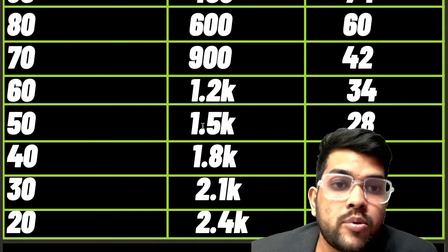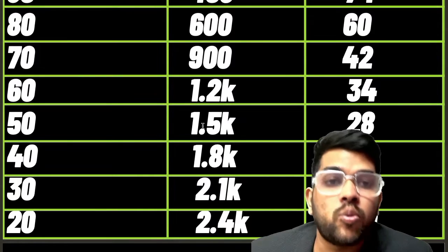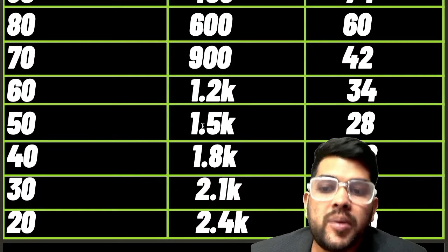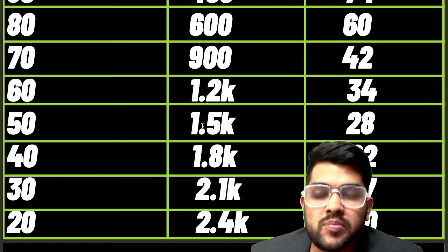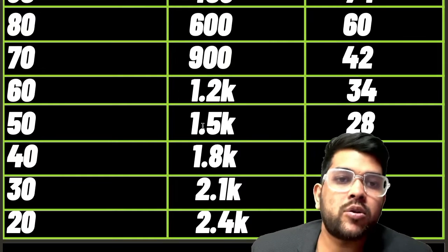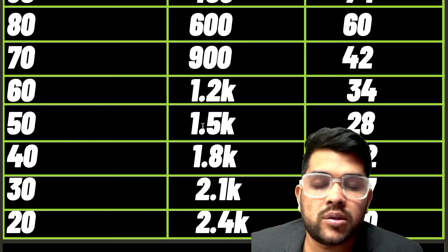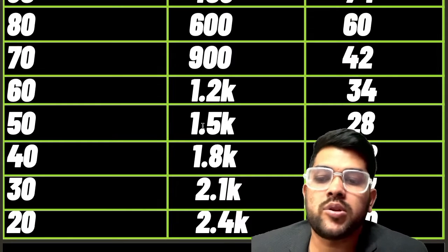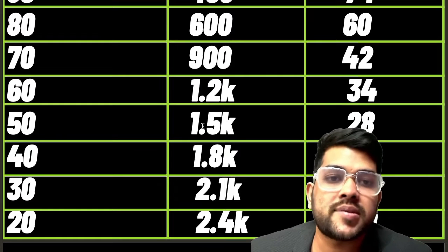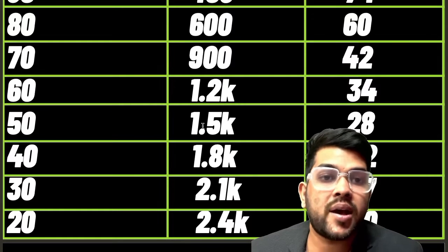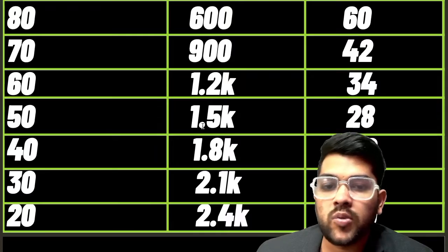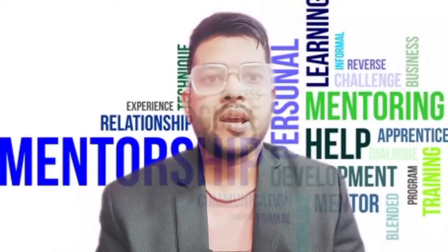These are the CRL PWD ranks. Your OBC PWD rank, SC PWD rank, or ST PWD rank will be even lower than what I have discussed. CRL PWD is common across most colleges because most colleges provide seats based on CRL PWD. But you will also get the benefit of your EWS, OBC, SC, or ST category if you are a PWD student — you get both reservation benefits.